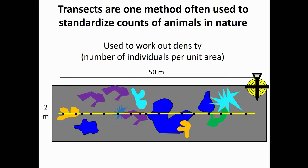In this case, we have a tape that's 50 meters long and we're going to measure an area that's 2 meters wide. We'll swim along this area counting the different types of corals present — in this case, two orange corals, three purple corals, two light blue corals, and so on. We can use these data, because we know the area we've sampled, to calculate how many different types of corals we have per unit area.